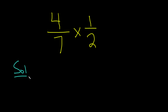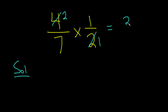Solution. So when you have something like this, you can cancel things. I'm going to show you two ways to do this. 2 goes into 2 one time, and 2 goes into 4 two times, then you just multiply straight across. 2 times 1 is 2, 7 times 1 is 7.